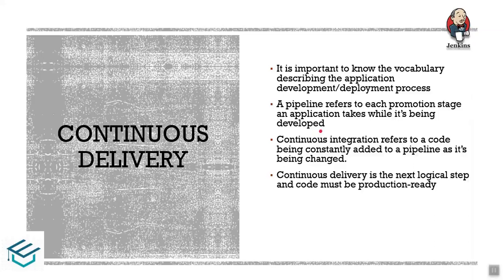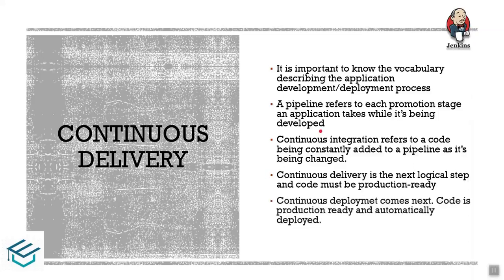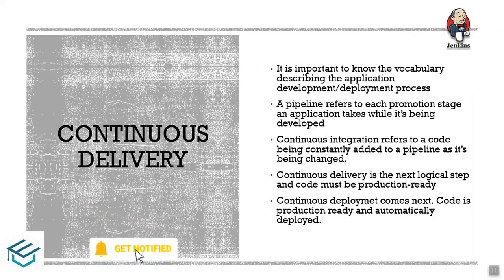After the acceptance testing stage comes continuous deployment — if the code is production-ready, it is automatically applied to production. That is continuous deployment. In the continuous pipeline: you develop code, commit it, integration happens with unit testing, acceptance testing, and load testing. After review, it moves to the continuous deployment stage — that is the delivery and deployment pipeline.